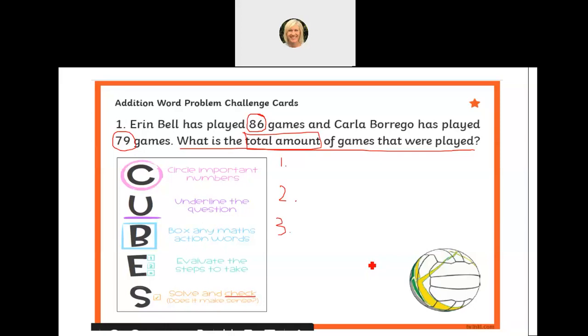Now I need to go back and show my workings. You must always do this because it gives us an insight into how you're thinking. Your workings may be drawing pictures, writing sentences, putting dots on the page. For me today, it's going to be writing an algorithm or a sum, because Erin has played 86 games and Carla has played 79 games. How many altogether? It's a simple addition, and look, the clue was up here as well.